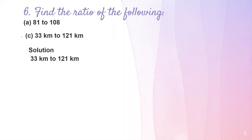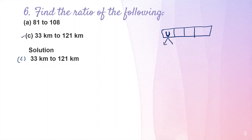Now for part C: 33 kilometres to 121 kilometres. For questions involving units, there is one added step, making four steps total. Step one: check the units — if they are different, convert them to make them the same. The other three steps remain: write in fraction form, reduce, then write as a ratio.